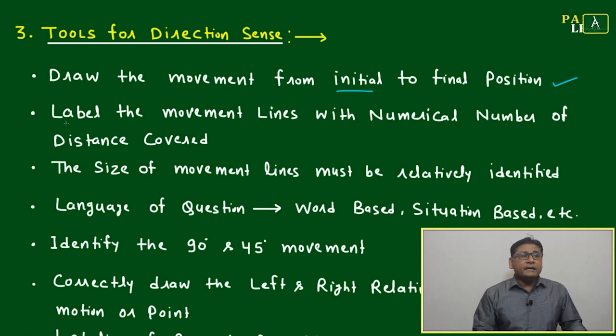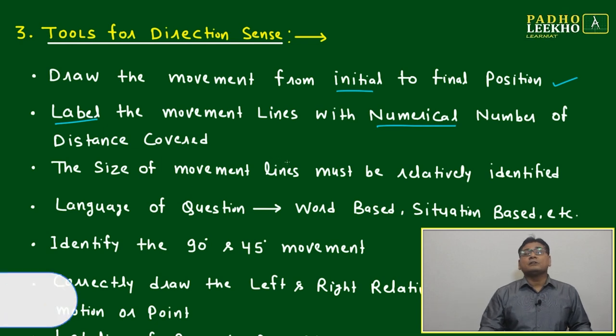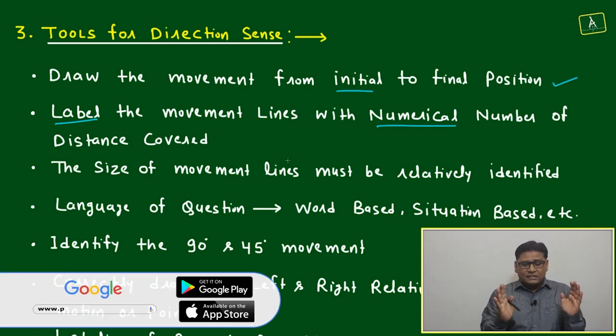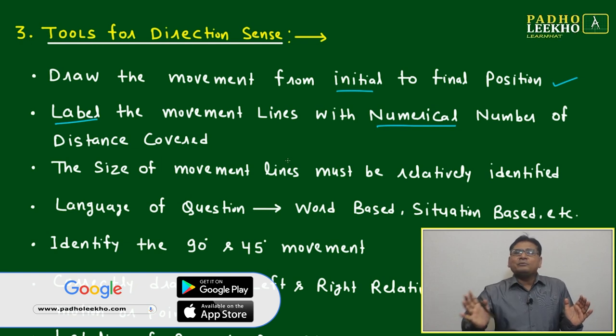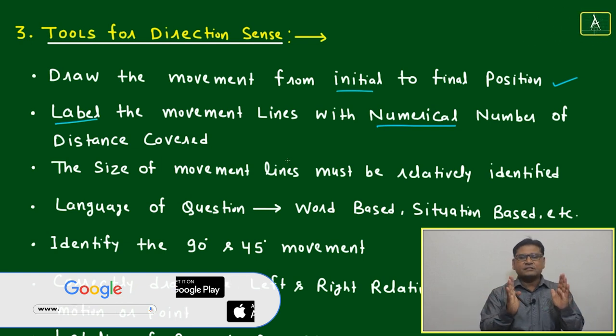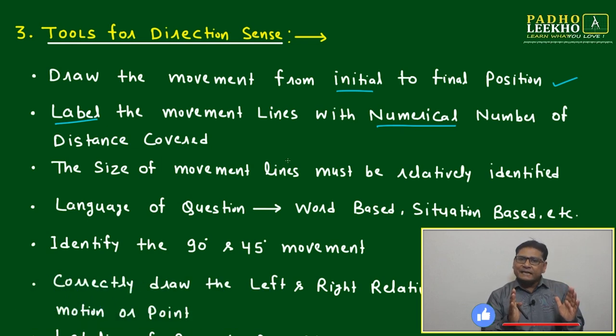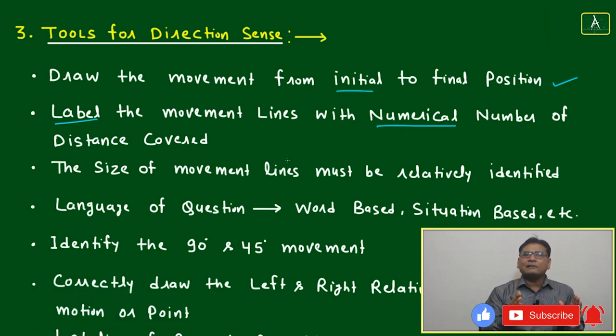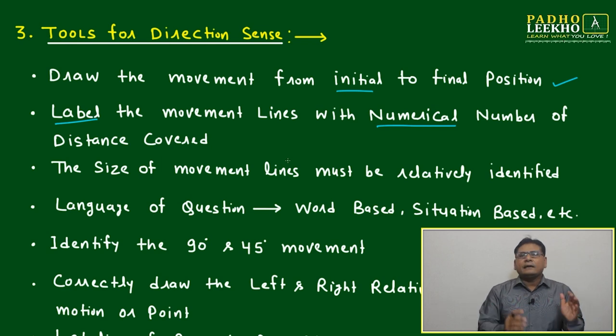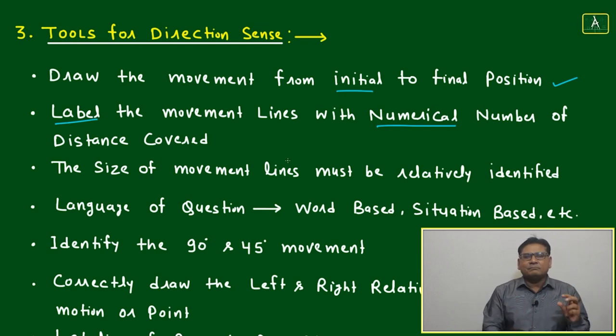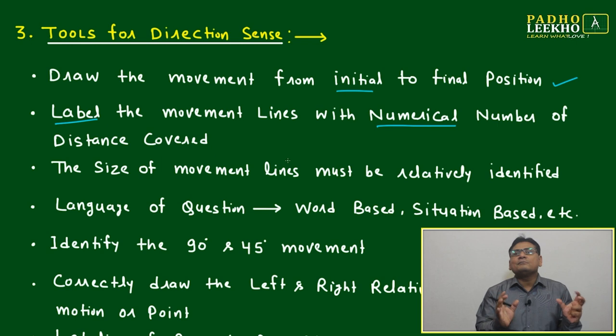Next, label the movement lines with numerical numbers of distance covered and accordingly put the size. Like if Rames has traveled 10 kilometers east, you put a line. If Rames has taken left and traveled 5 kilometers, 5 will be almost half of this. Whatever numerical number is there, you must write on the line and relatively, just by eye, not perfect measurement, try to take relative measurement of the lines also.